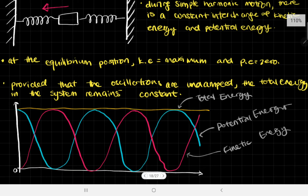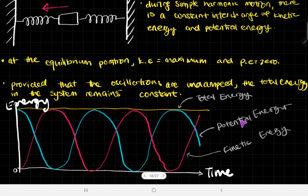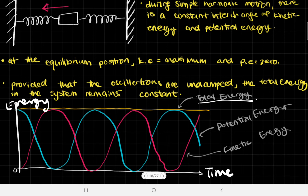If we graph energy against time, the potential energy oscillates up and down, and the kinetic energy also oscillates up and down but is the flipped version. When we add them together, we always get the same value, giving us a constant total energy. This tells us that without things like friction taking energy away as heat, in this theoretical world the energy remains constant, but the types of energy are constantly interchanging.